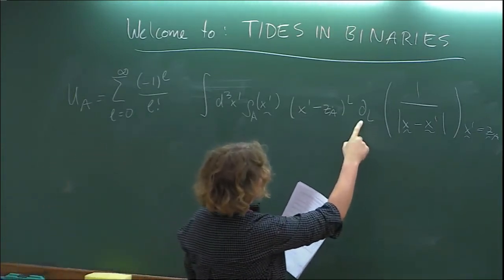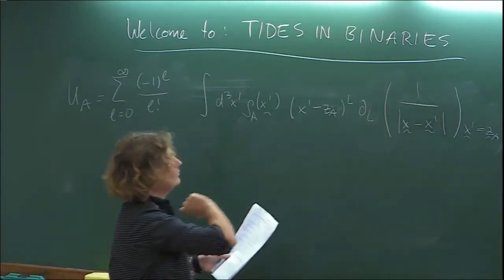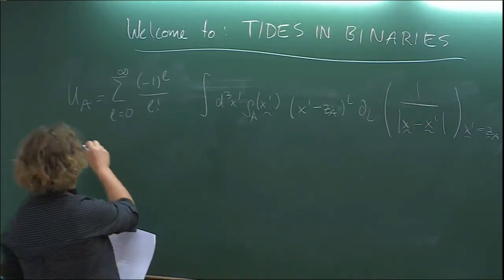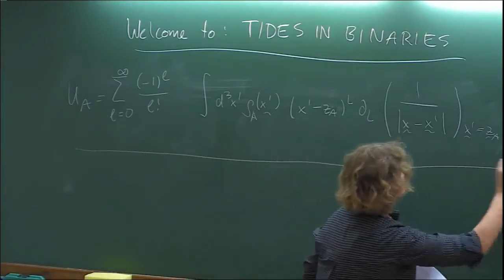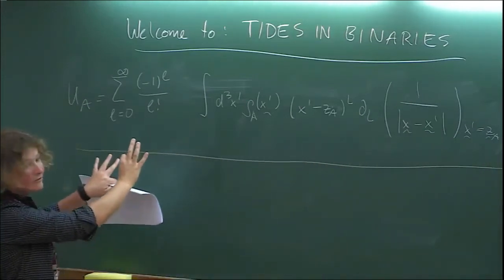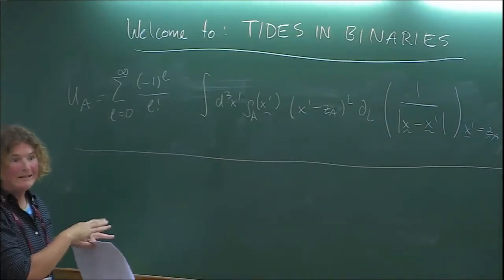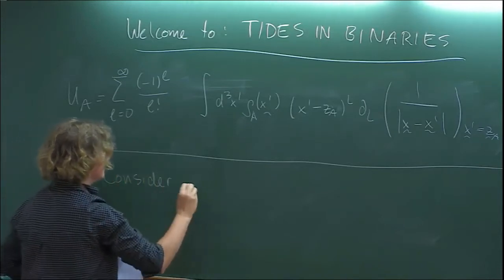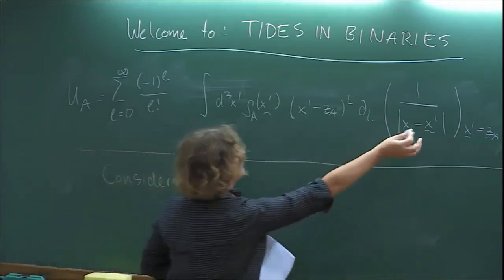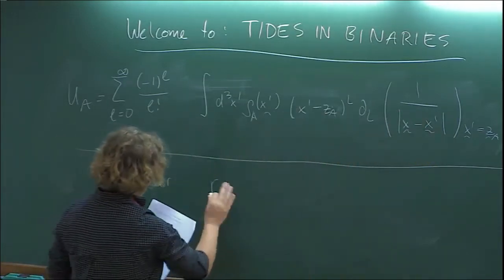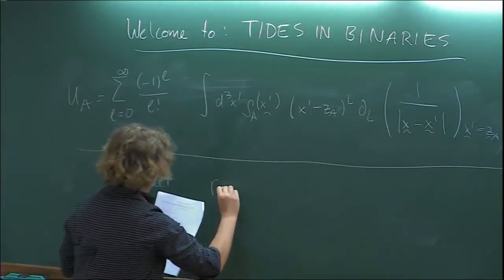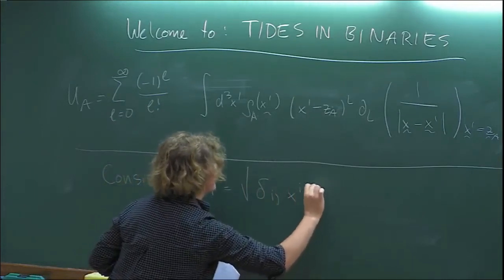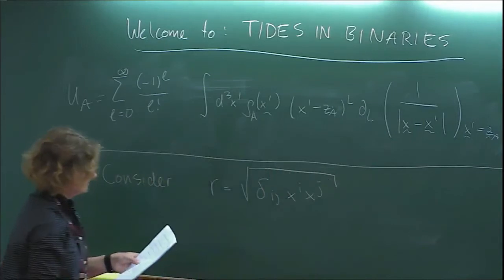To rewrite this in a more suggestive form, we need to work out what these derivatives of 1/r are. Consider r = sqrt(delta_{ij} x^i x^j). Taking l successive derivatives of 1/r gives a general result: d_L (1/r) = (-1)^L (2L-1)!! times N^{<L>} / r^{L+1}, where N^i = x^i / r is a unit vector and the angular brackets denote a symmetric trace-free (STF) combination of indices.